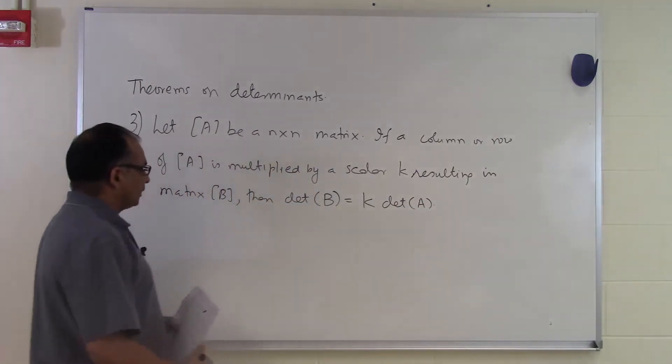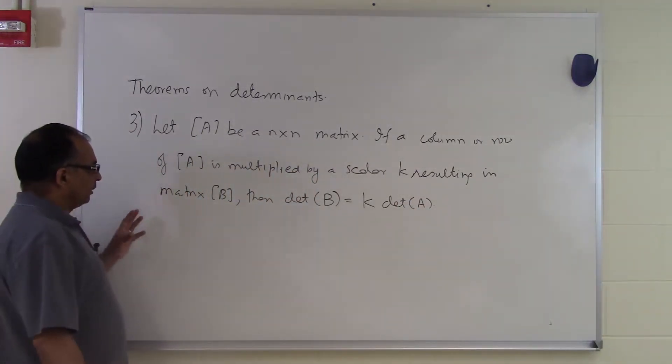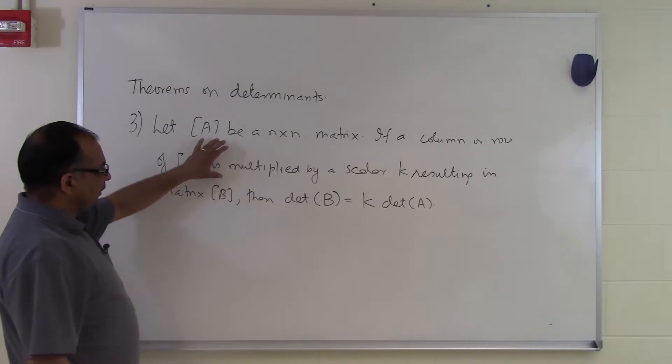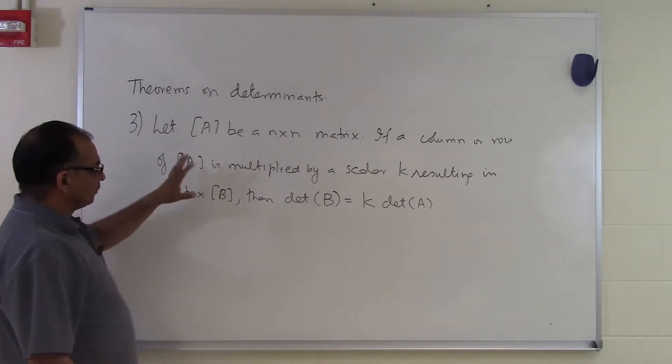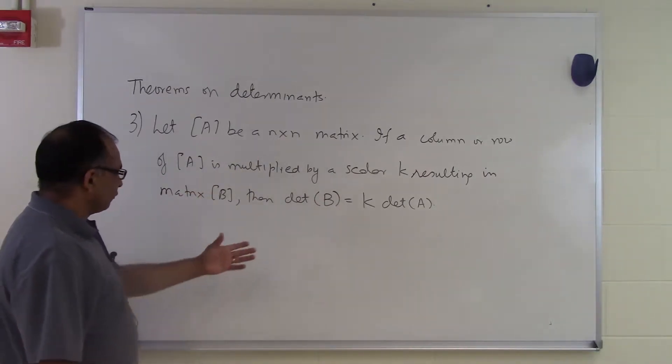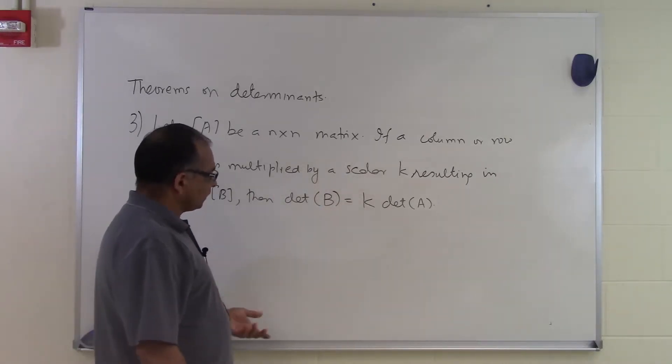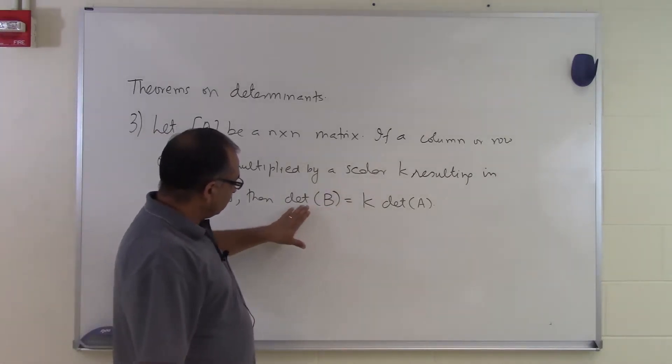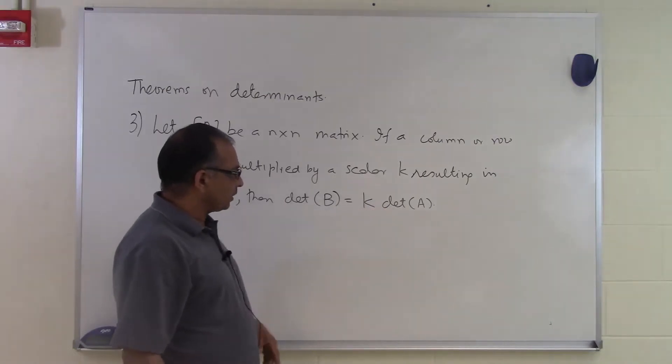So if you are able to recognize that another matrix is simply one of the rows or columns multiplied by a scalar k, you don't have to find the determinant of B by using the minors and other methods. You can simply say the determinant of B is k times the determinant of A.